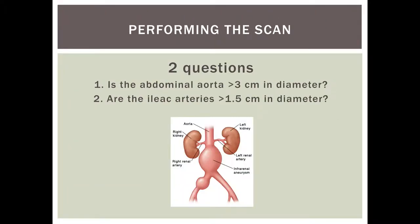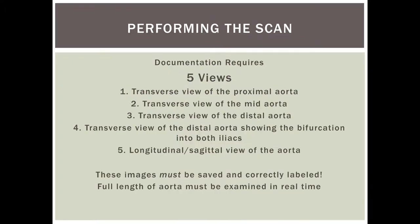When performing the scan, the two key questions are: is the abdominal aorta greater than three centimeters in diameter, and are the iliac arteries greater than 1.5 centimeters in diameter? You will obtain five views: transverse views of the proximal, mid, and distal aorta; a transverse view of where the distal aorta bifurcates into the iliac arteries; and one longitudinal view of the aorta. Remember to save and correctly label the images.